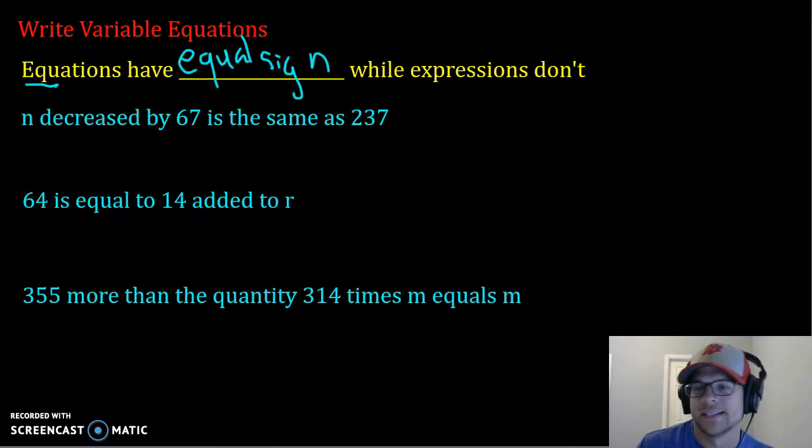N decreased by 67 is the same as 237. So the word decreased by tells us to subtract. So we're going to say N minus 67. Now is the same as. Another word for same as is equal to.